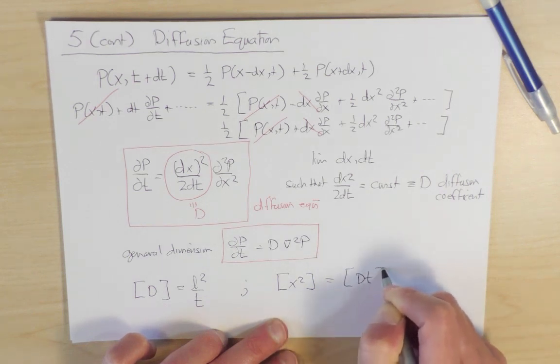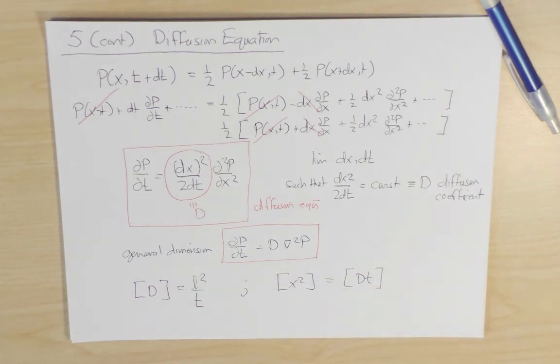So with essentially zero work, we recover the RMS displacement of a random walk just from the dimensional analysis of the diffusion equation. So in the next slide, I'll show you how to solve this diffusion equation.